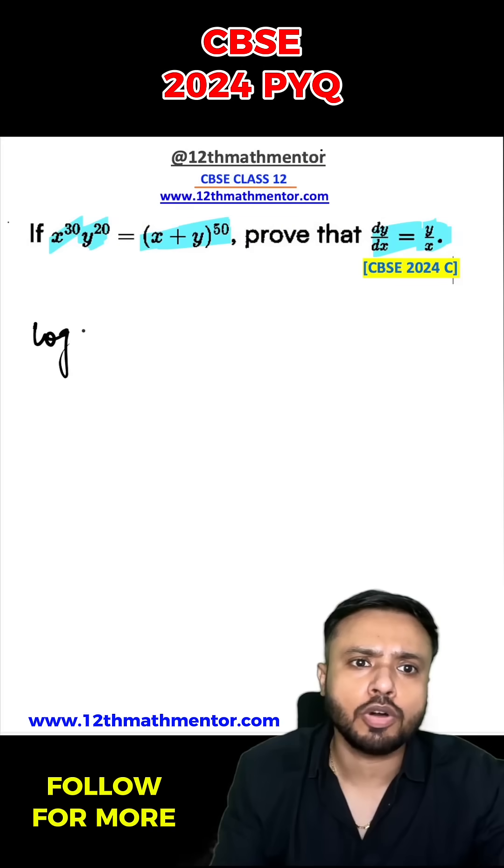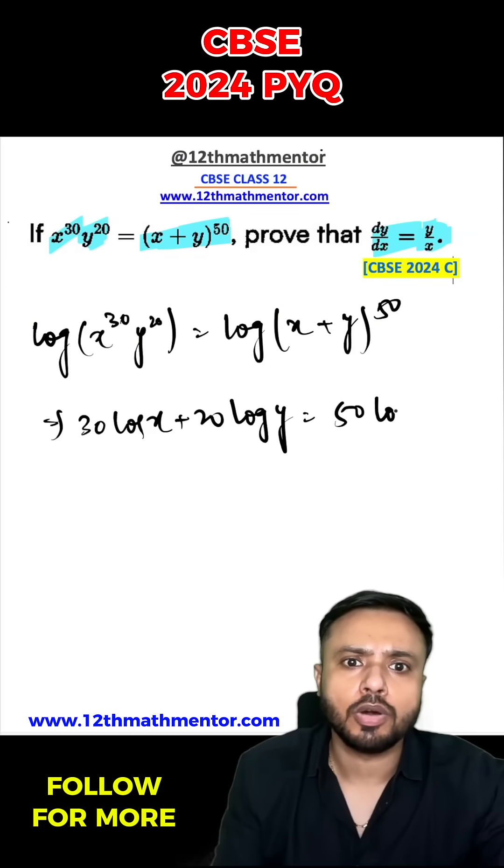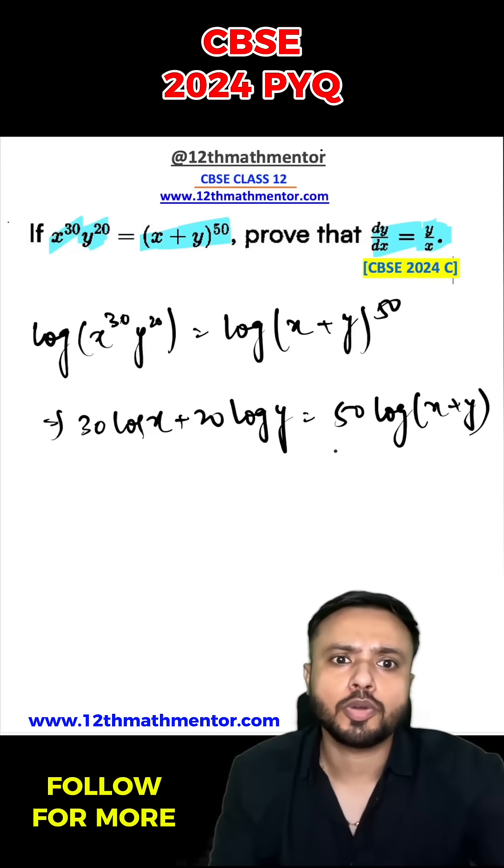So to solve this question, first I'm going to take log both sides. So log x raised to the power 30, y raised to the power 20 is equal to log x plus y raised to the power of 50. So 30 log x plus 20 log y equals to 50 log x plus y. I've used logarithmic properties over here.